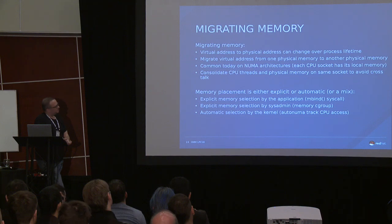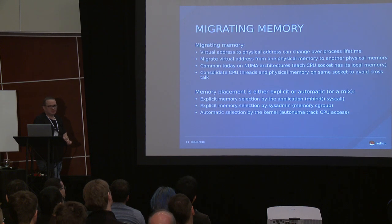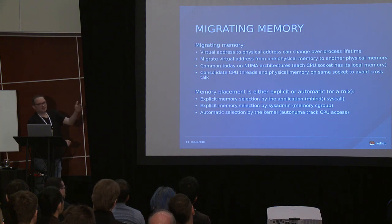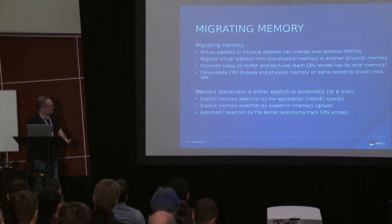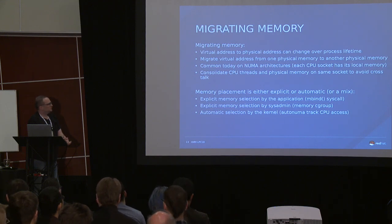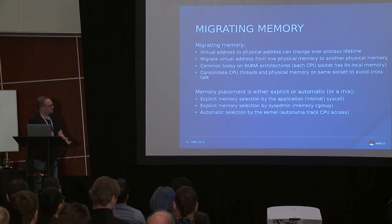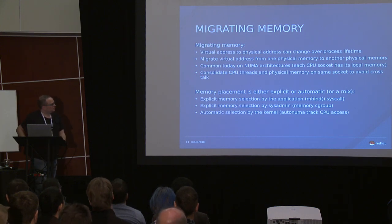When you can move memory around, you generally face two choices: explicit placement — where the application says "I want to move memory to that node" — or automatic placement. The most common tools right now are mbind for explicit memory selection on NUMA, and memory cgroups to limit a process to certain physical memory. The automatic approach is AutoNuma, which handles CPU memory placement on NUMA architectures.